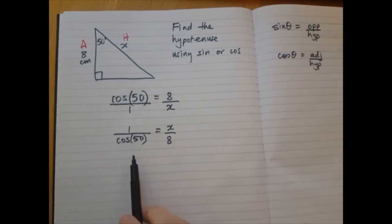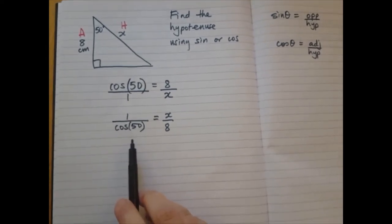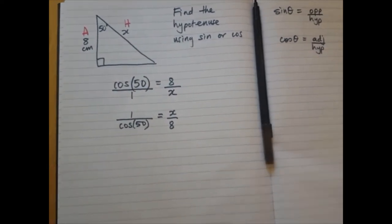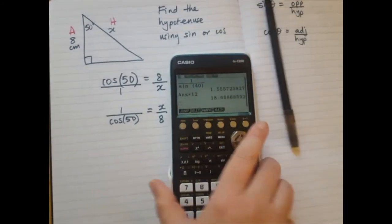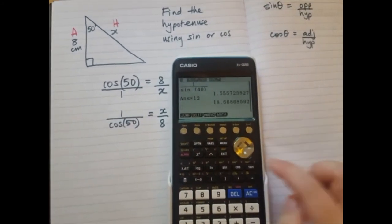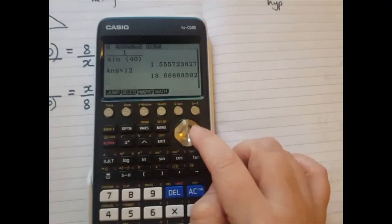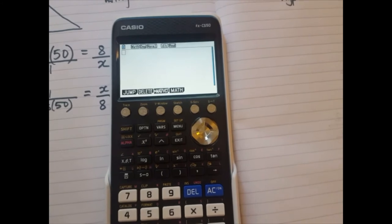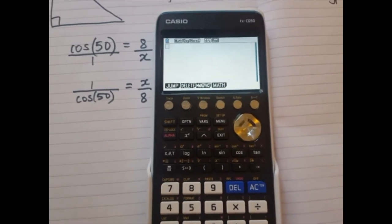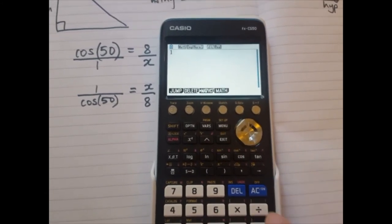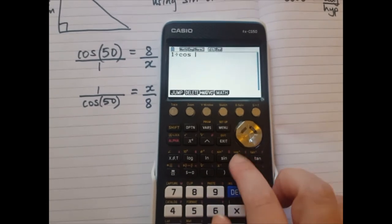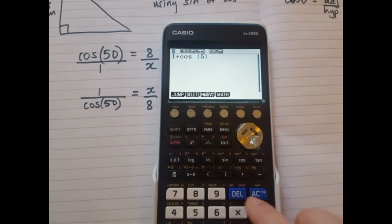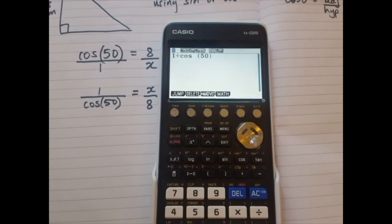Now on my calculator, I'm going to work out what is 1 over cos 50. So previously, I used the fraction button, but maybe you don't have a fraction button on your calculator. So if you don't have a fraction button, you're going to use divide. So 1 divided by cos 50, like this.